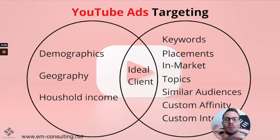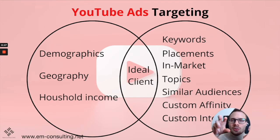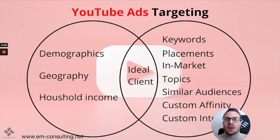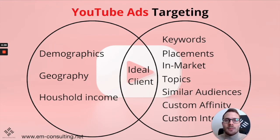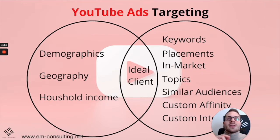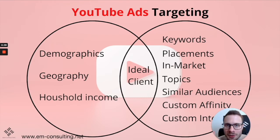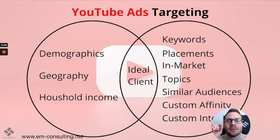We also want to look for an intersection between interests and demographics — that's where your ideal client is. On YouTube, we have different options: we can target keywords. If people are actively searching for a solution — how to write a best-selling book, how to scale my coaching business to 50k per month, how to talk to women if you're a dating coach — you can target exactly this, because then you get people who have the problem you can solve.